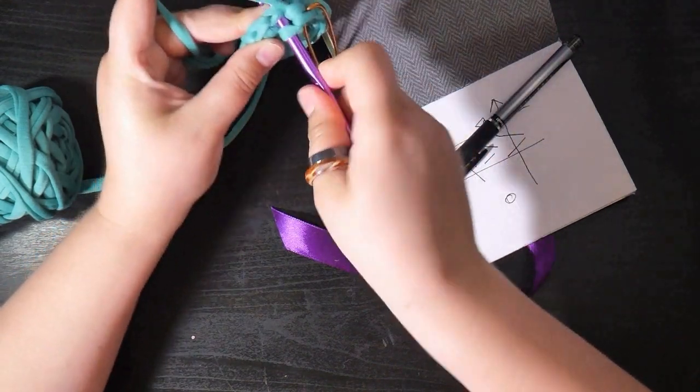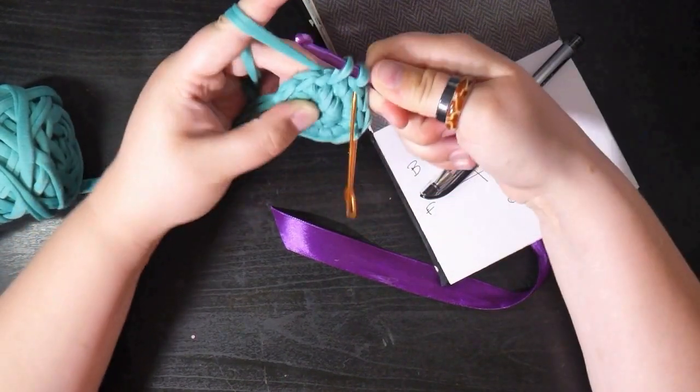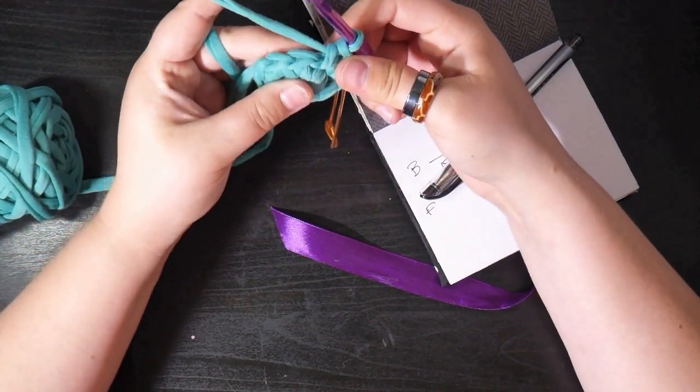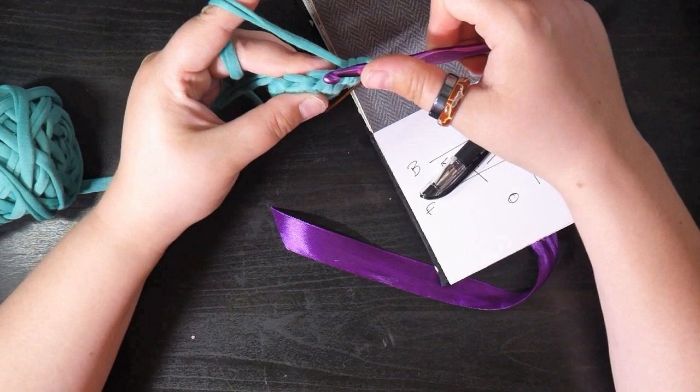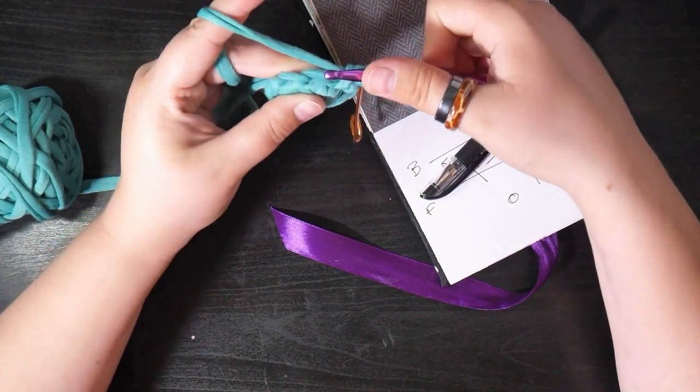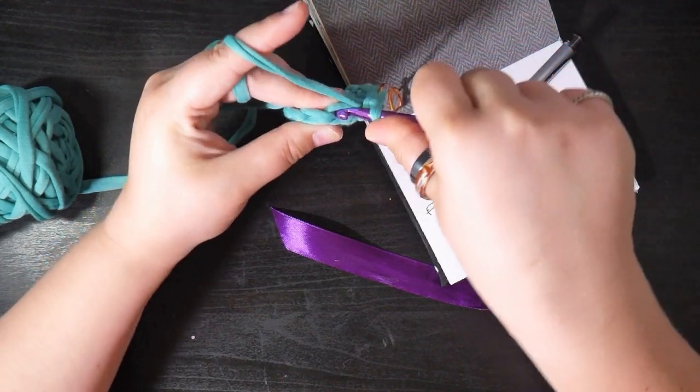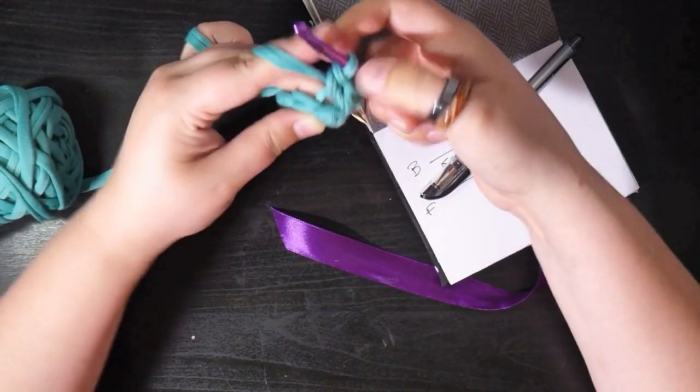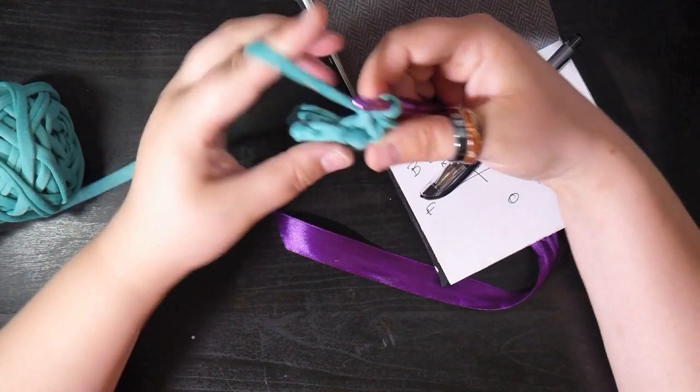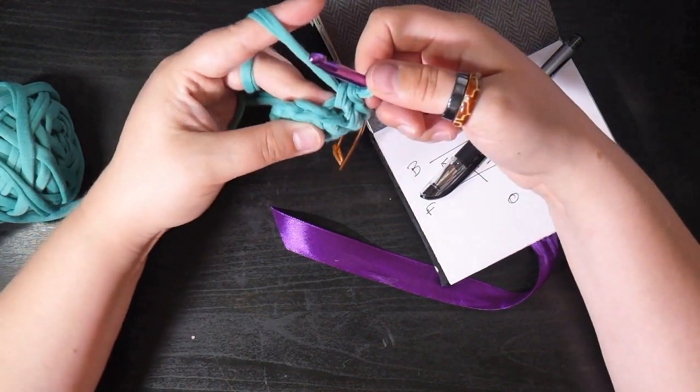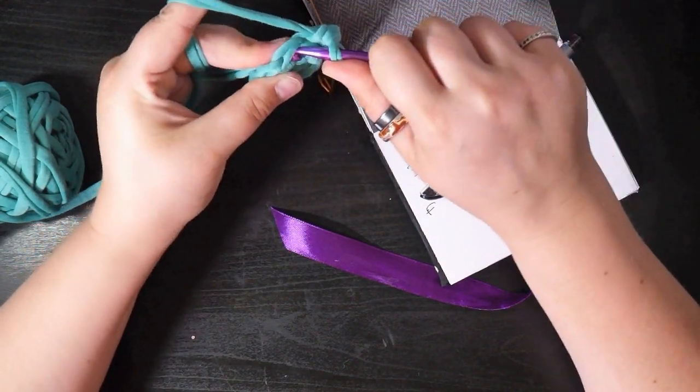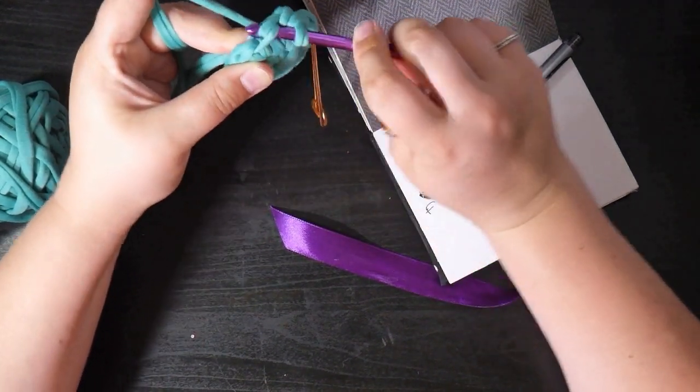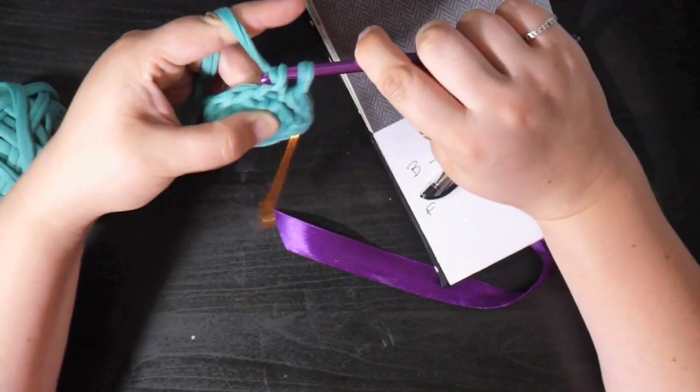If I make a normal double crochet, I'm going to pop my hook through both parts of that V and bring the yarn back. If I want to do a back loop only, I take my hook, I put it on the top of my crochet and just push it through the back portion of the V. The same principle applies if you want to do front loops only. So you just take your hook and push it, pop it up so it comes through the front loop only.